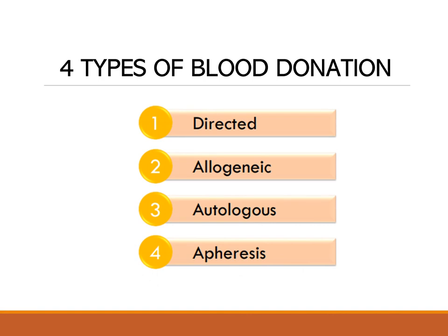Now we go to the different types of blood donation. There are basically four types: directed, allogenic, autologous, and apheresis. In the succeeding slides of this presentation, we will find out the definitions of these different blood donation types.